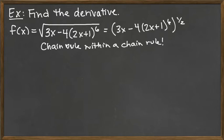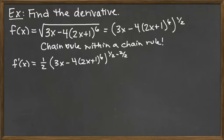We've got to start on the outside and work our way in. When we're taking the derivative, we have f prime of x equals - we bring down this power of 1 half and the whole thing that's inside the parentheses there, the 3x minus 4 times 2x plus 1 raised to the 6th power now has the power 1 half minus 2 halves. But then we're not done because this part here is the ugly part that's inside and we need to pull out its derivative.